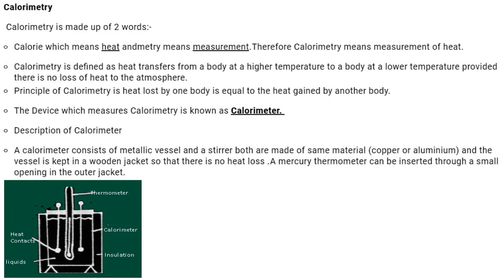Calorimetry: from 'calorie' (heat) and 'metry' (measurement). Calorimetry is defined as heat transfer from a body at higher temperature to a body at lower temperature with no loss to the atmosphere. The principle of calorimetry: heat lost by one body equals heat gained by another. The device is called a calorimeter — a metallic vessel and stirrer (both copper or aluminium) kept in a wooden jacket to prevent heat loss, with a mercury thermometer inserted through an opening.